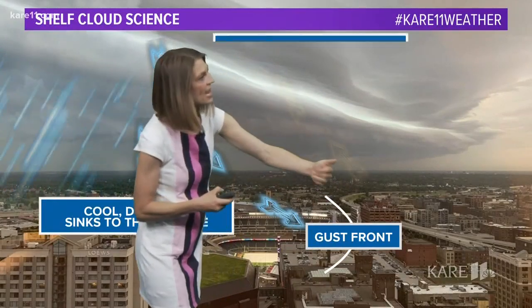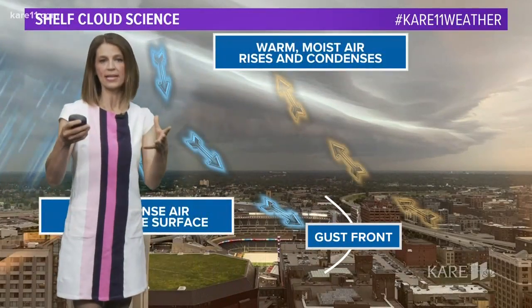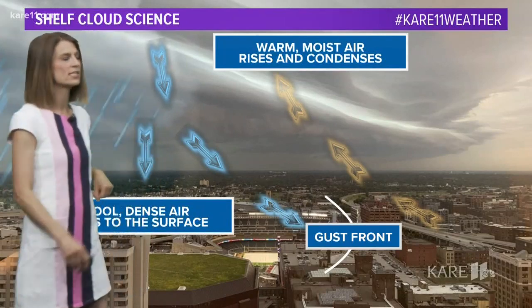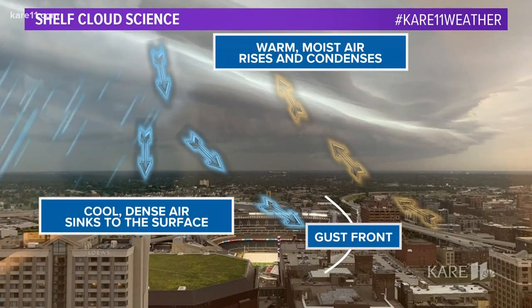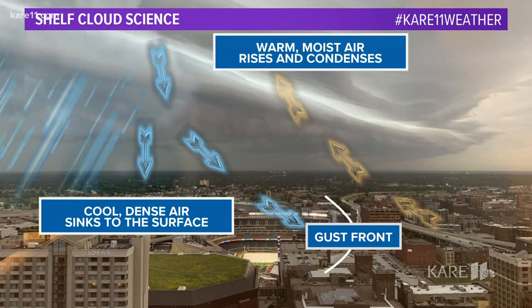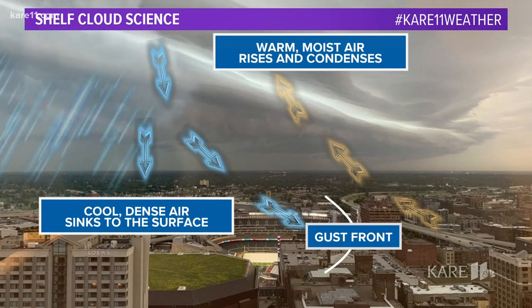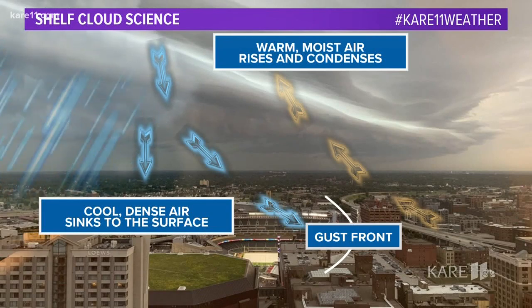Then, ahead of the storm, the warm, moist air is forced up into the clouds. It cools, it condenses, and it's that action that's forming the shelf cloud right along the leading edge of a line of storms.